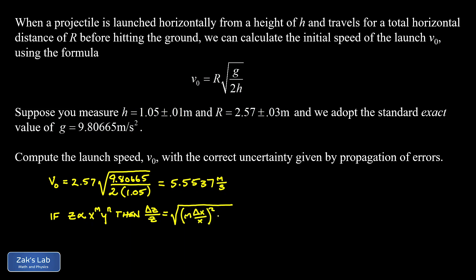In other words, that exponent comes out in front before you do the squaring in that term, and then a similar term for y. So n times delta y over y, all squared.